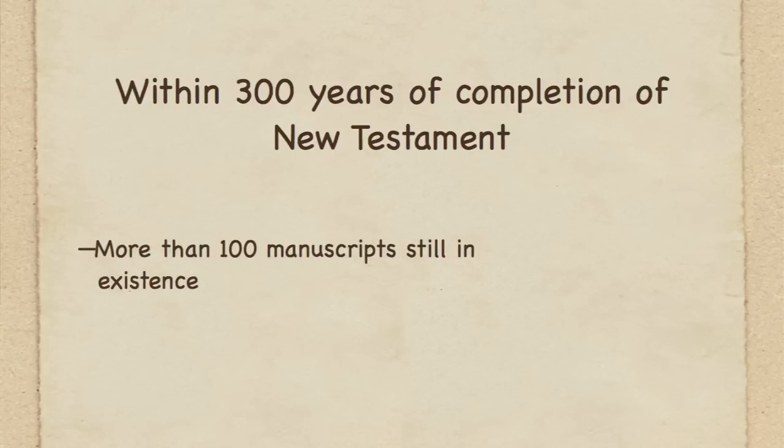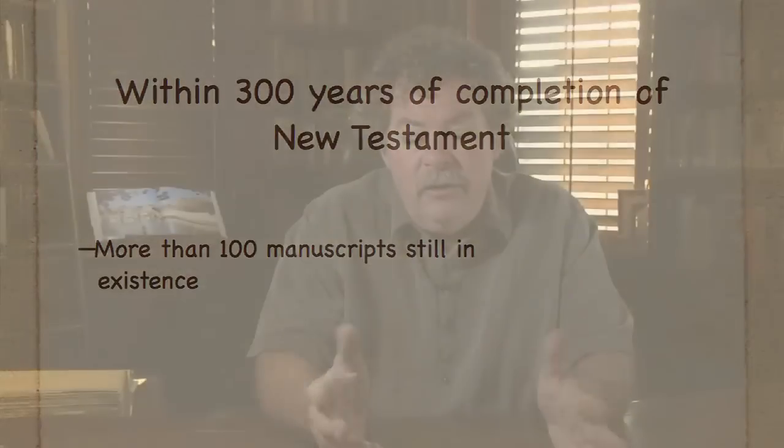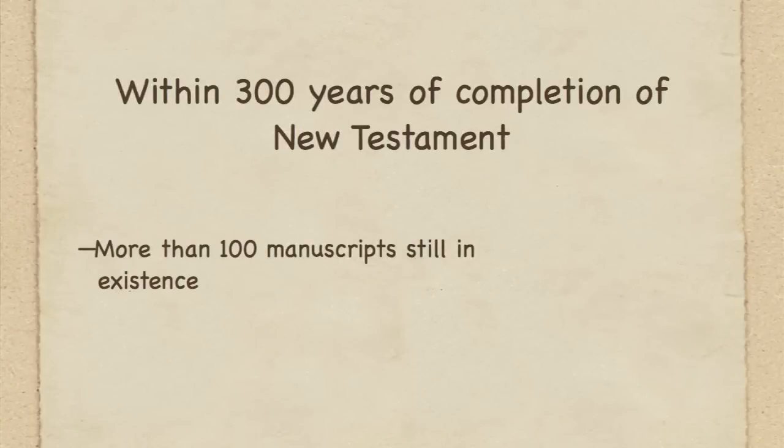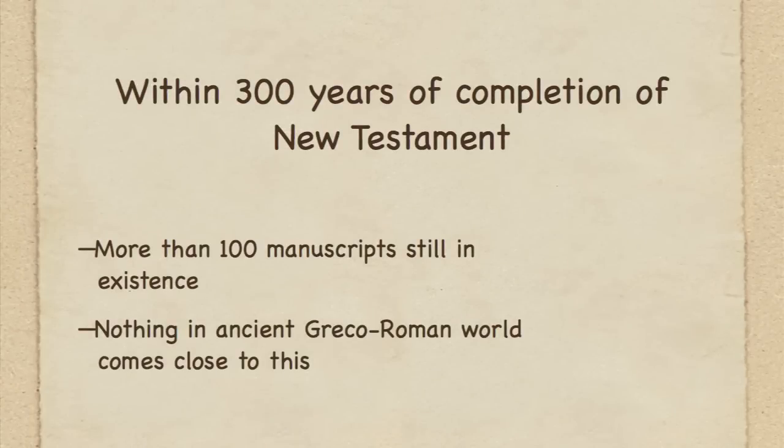Then you get into the third century, and we have quite a few more manuscripts. By the time we get to within 300 years of the completion of the New Testament, we have well over 100 manuscripts in Greek alone — not counting the other ancient languages — including our first complete Greek New Testament manuscript. The entire New Testament is duplicated many times over in these manuscripts through the first 300 years after its completion. There is nothing in the ancient world that comes close to that in terms of the completeness of material and the date of the material.